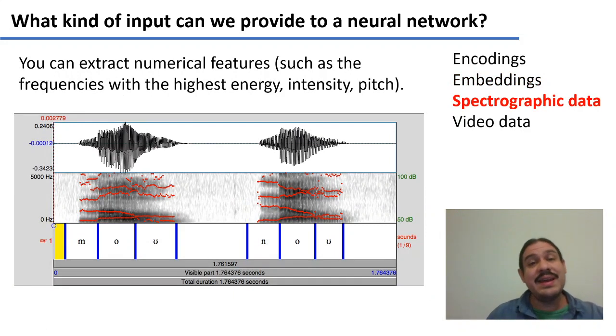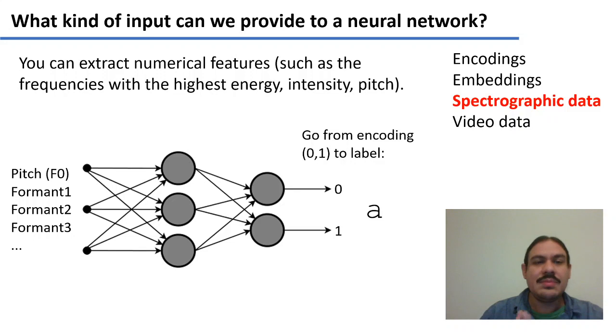We could also take spectrographic data. As we saw in one of our previous videos, if we have a sound wave, we can extract a lot of features from it. For example, the frequencies with the highest energy, the volume or intensity, the pitch of your voice. And you could use these energy values as input to a neural network to, for example, classify a sound. Let's say you have the formants, the energy, the frequencies, and the energy for a certain sound, and the neural network will give you what sound it is as the output. For example, ah. This is one way that you can provide data to a neural network.